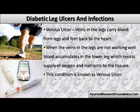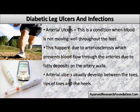Venous ulcer: veins in the legs carry blood from the legs and feet back to the heart. When the veins in the legs are not working well, blood accumulates in the lower leg, which restricts the supply of oxygen and nutrients to the tissues. This condition is known as a venous ulcer.